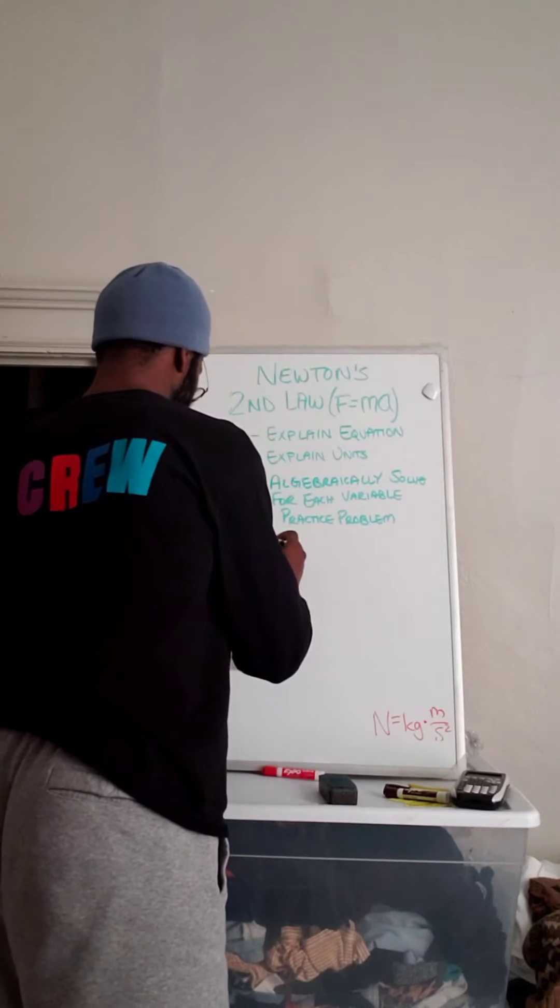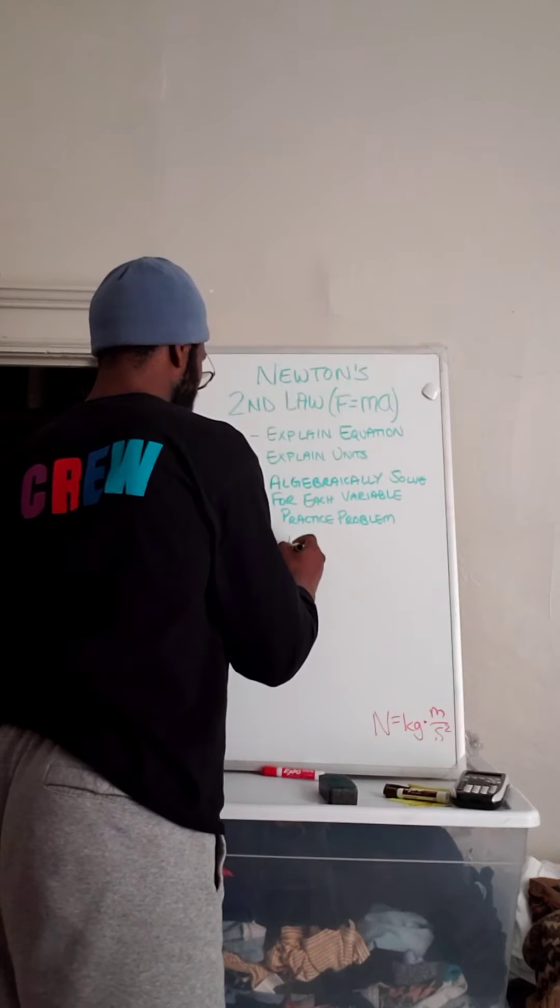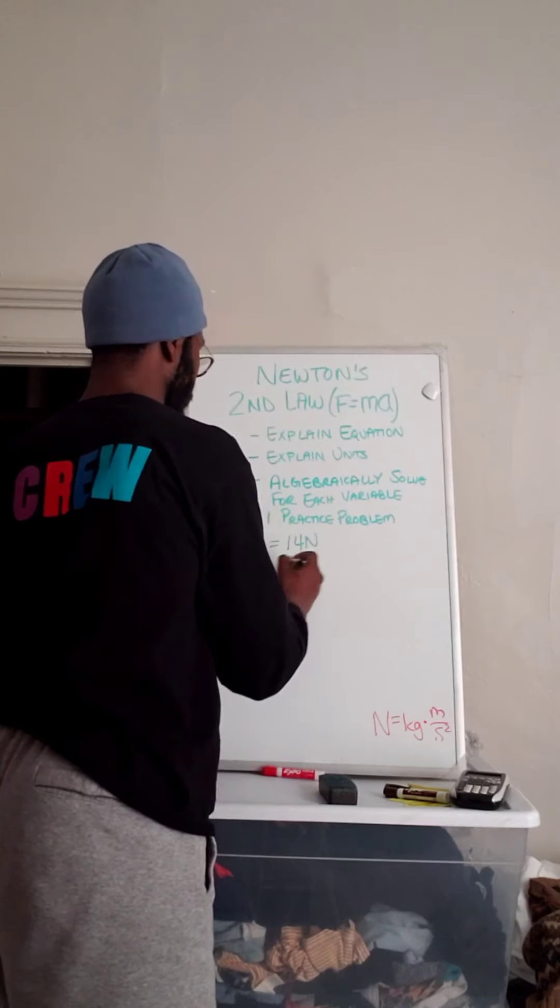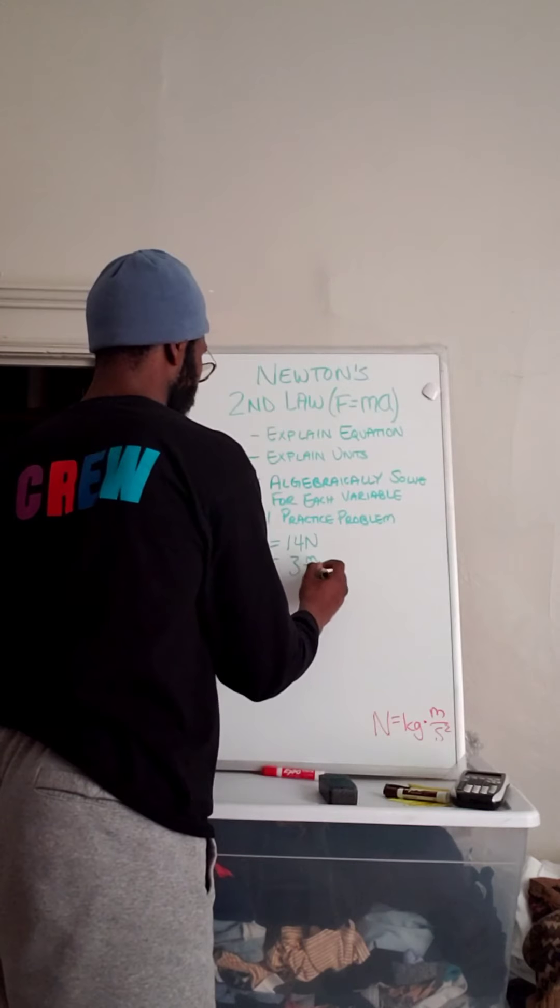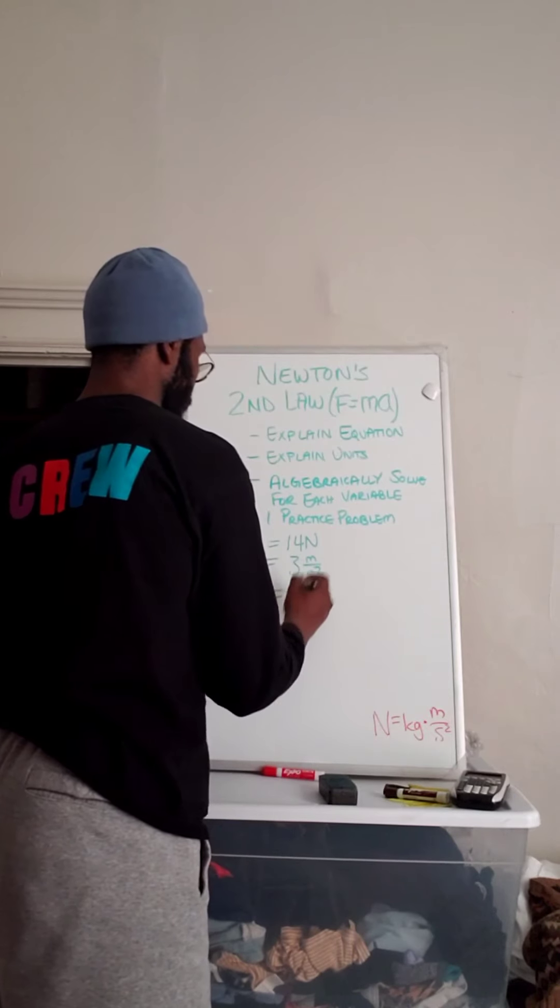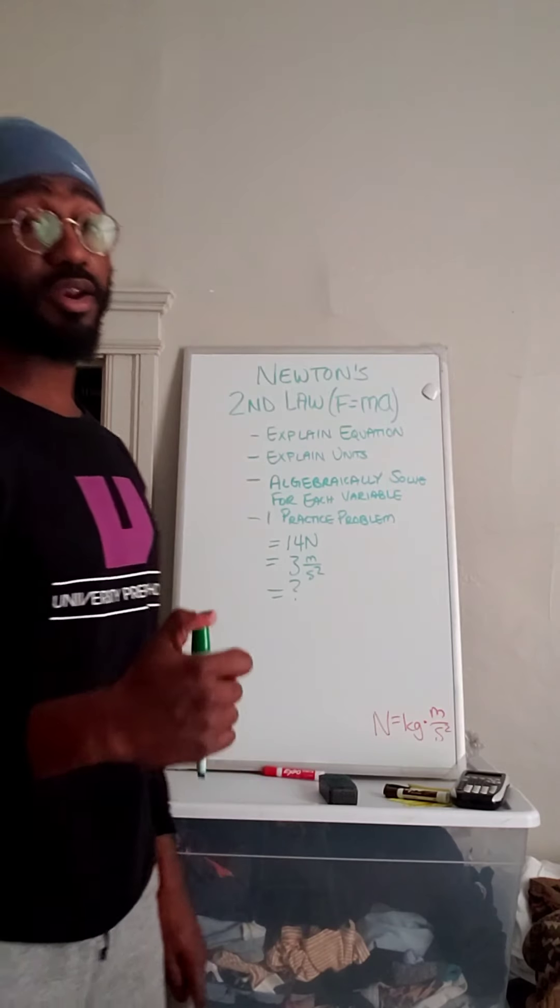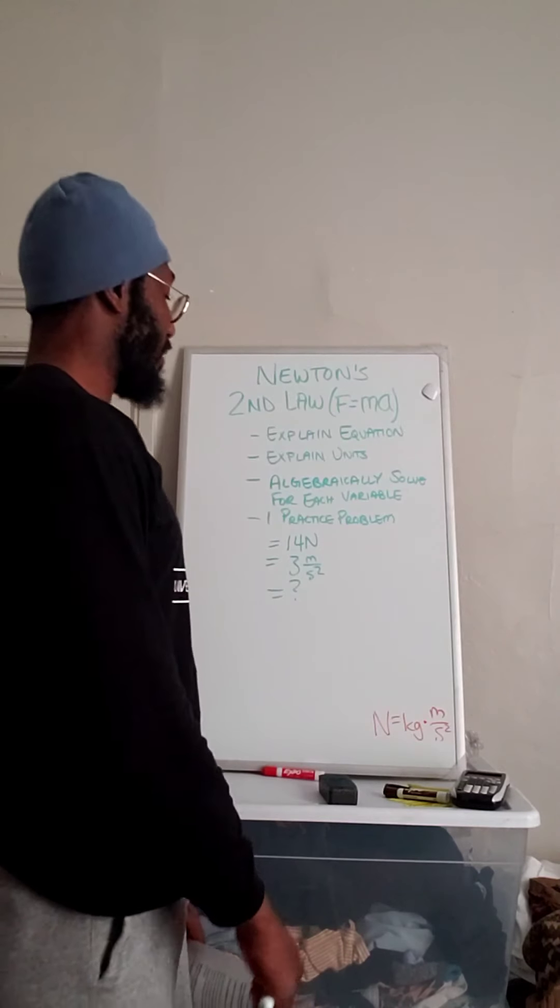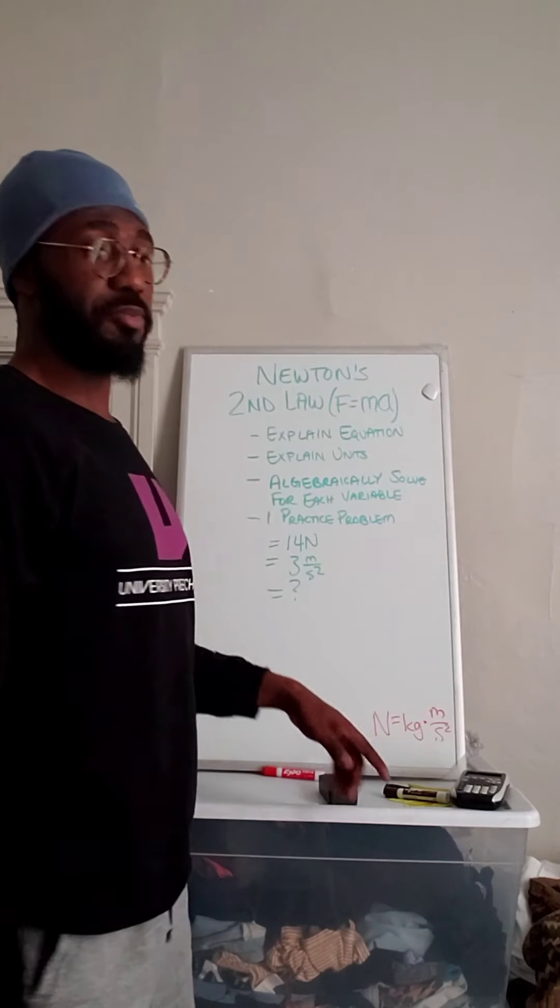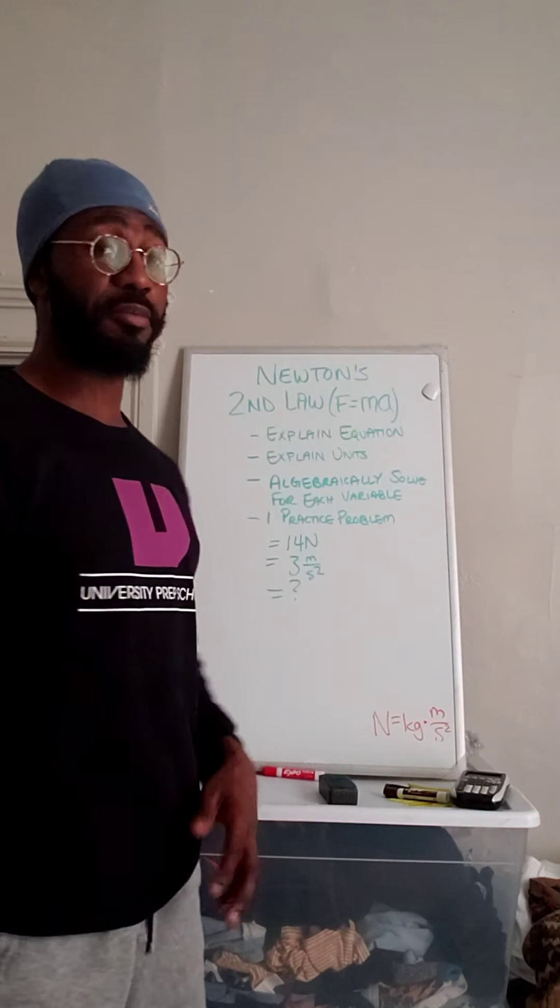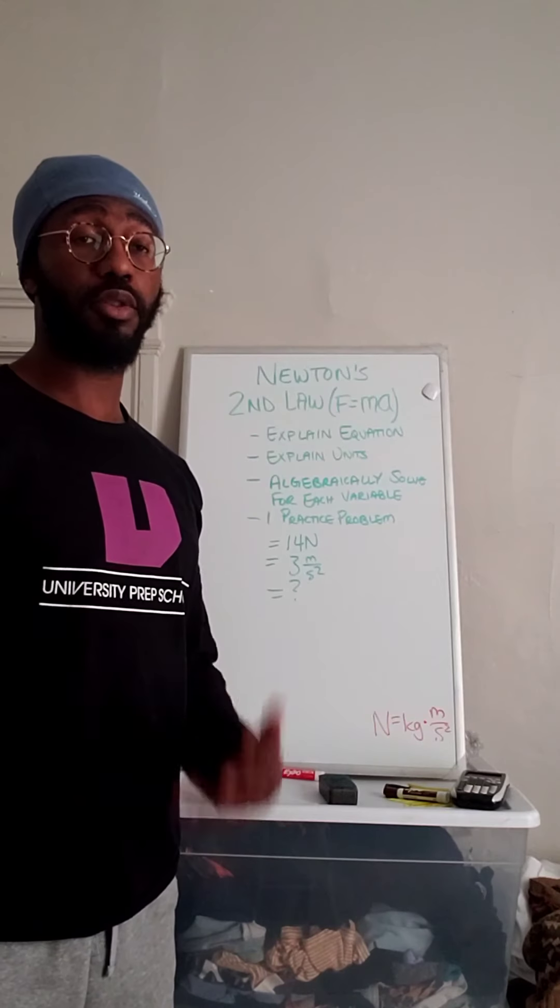So we write down our knowns and unknowns. First, all the measurements in the equation, 14 newtons, 3 meters per second squared. And then we always write a question mark. I know a lot of you all don't write the question mark, perhaps out of pure laziness. But when you write the question mark and attach it to a variable, that helps you know what you're looking for.